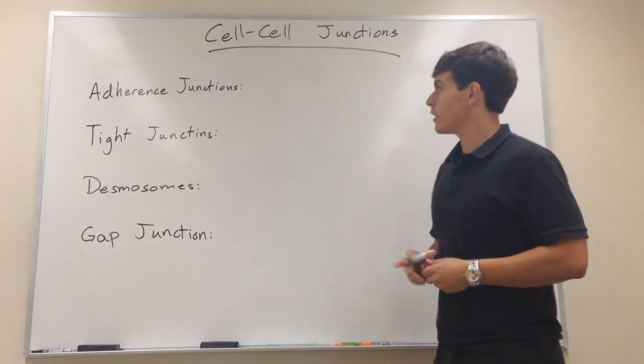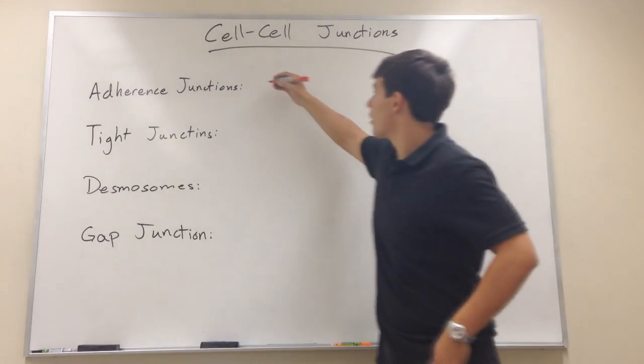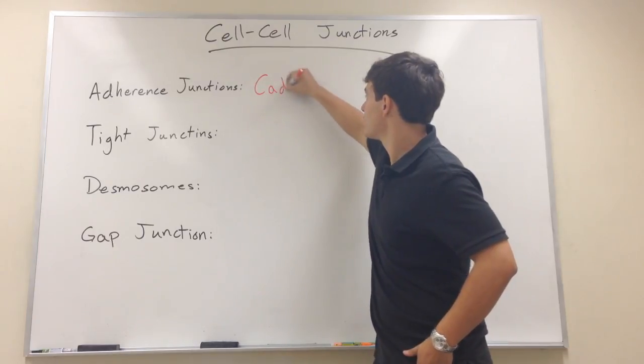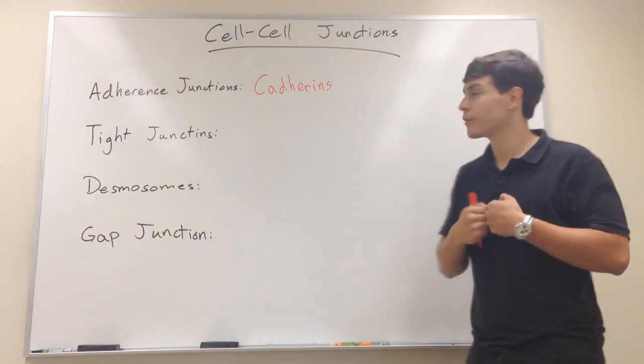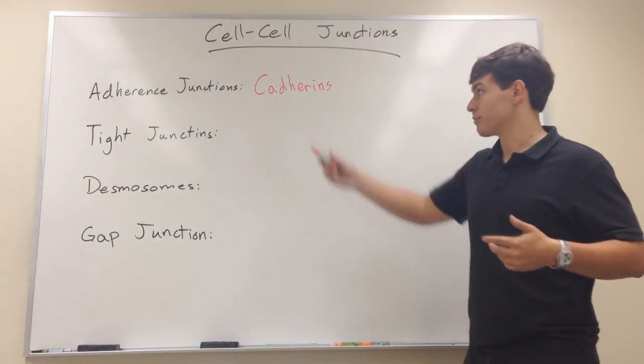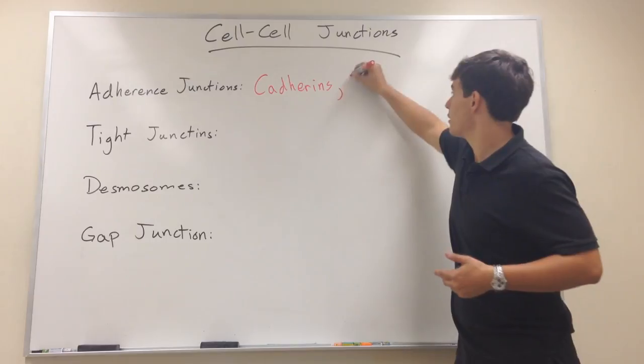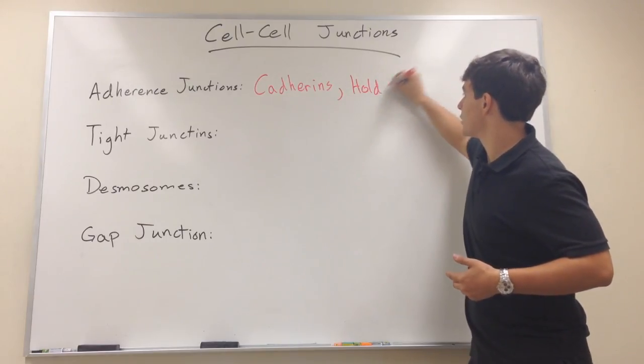Adherence junctions are very straightforward, are comprised of cadherins. We talked about e-cadherins holding epithelial cells together really well. AJs or adherence junctions do that right here and basically just hold cells together.